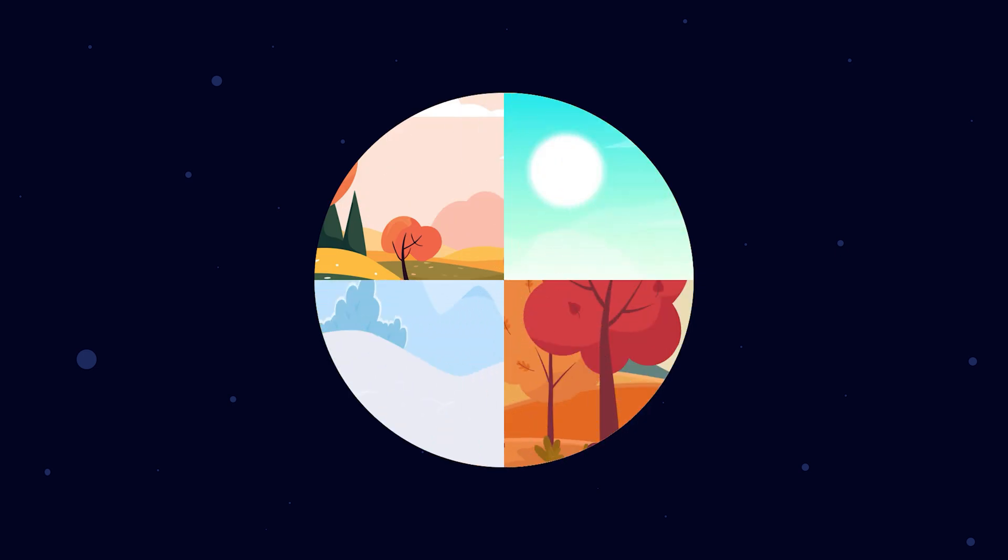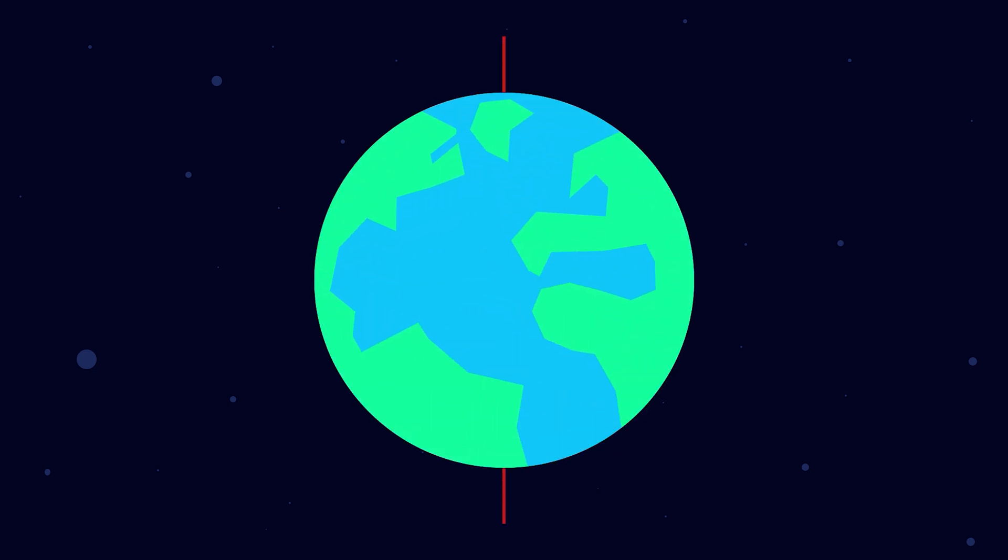Why do we experience different seasons throughout the year? The primary reason we have seasons is due to the tilt of Earth's axis. The Earth is tilted at an angle of approximately 23.5 degrees relative to its orbit around the Sun.